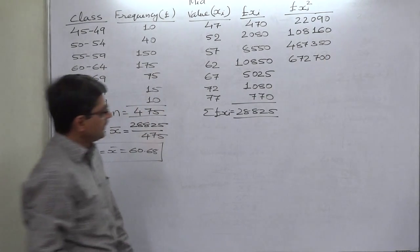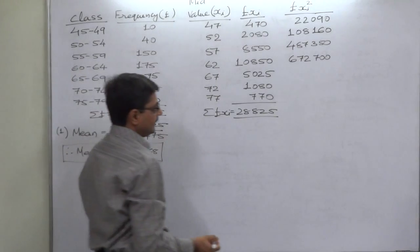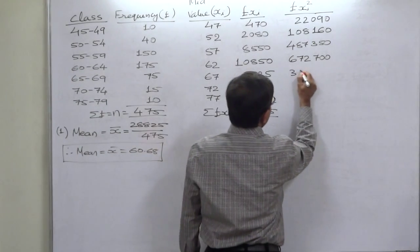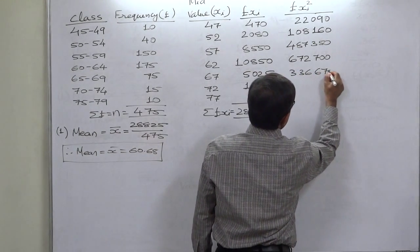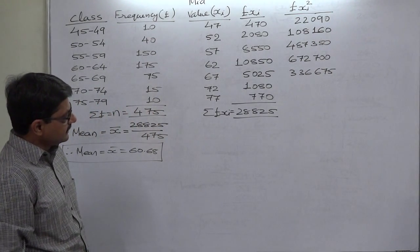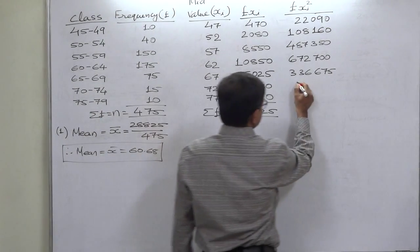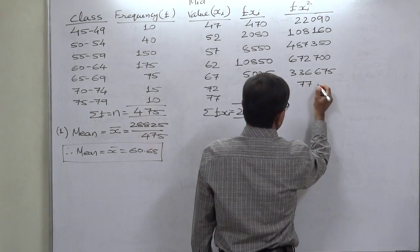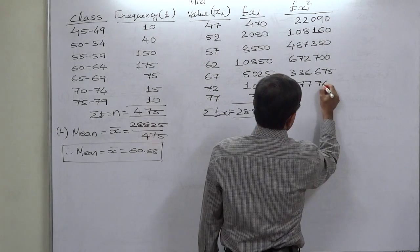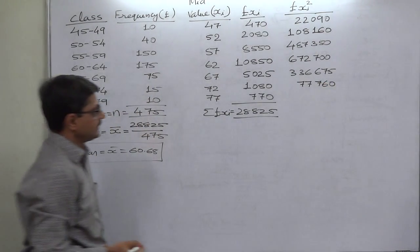67 multiplied by 5025, 336,675. 72 multiplied by 3600, 259,200.